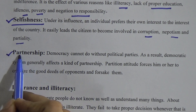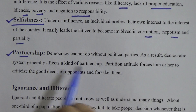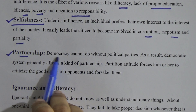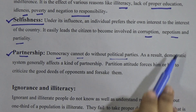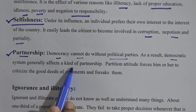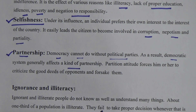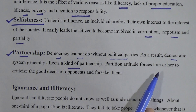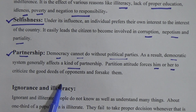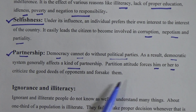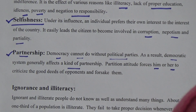The third barrier is partisanship. Bangladesh is a democratic country. In every democratic country there are parties — democracy cannot do without political parties. There will be more than one political party. Democratic systems generally create partisanship. Partisan attitude forces a person to criticize the good deeds of opponents and forsake them. In a democratic country like Bangladesh, there are many political parties and each owns their own interest.